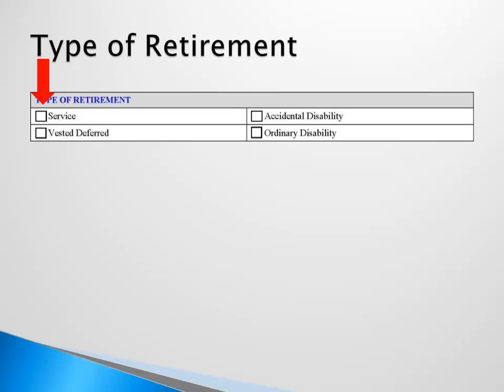If you are currently working and contributing to your pension, check the Service box. If you are not currently working for an employer within the retirement system, check the Vested Deferred box. If you are an active member who became disabled due to a work-related condition, check the Accidental Disability box. If you are an active member who became disabled due to a non-work-related condition, check the Ordinary Disability box.